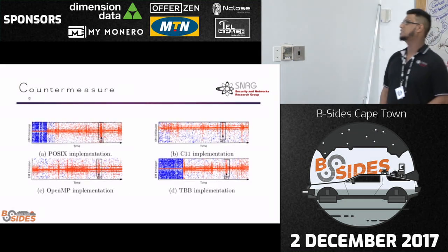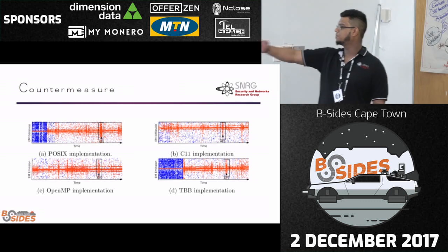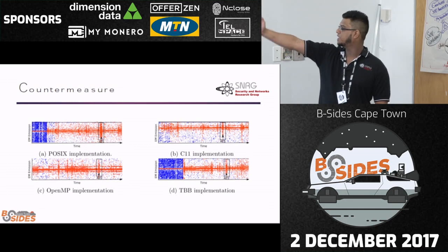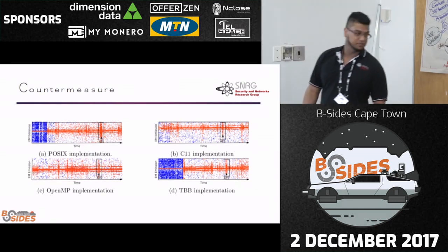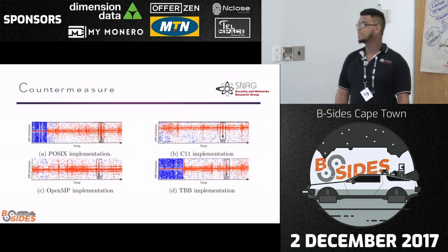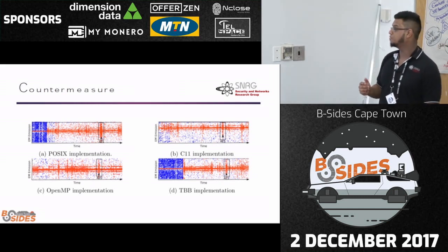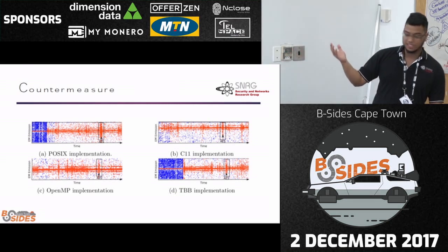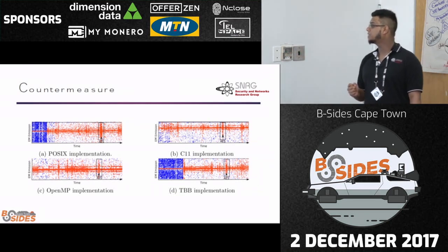These are the EM signatures from the different thread implementations — P threads, C11 threads. You can see these boxes where we were still able to visually see the AES encryption algorithm even though it was in a threaded environment. If you can see it, you can easily extract that data and recover the sub-keys.